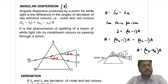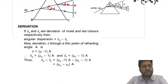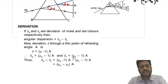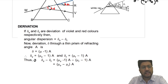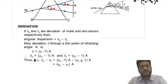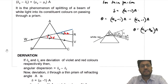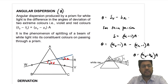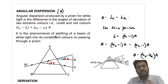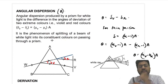The derivation: δ_v = (μ_v − 1)·A and δ_r = (μ_r − 1)·A. Thus δ_v − δ_r = θ = (μ_v − 1)·A − (μ_r − 1)·A. The A cancels and you get (μ_v − μ_r)·A. You have to remember this formula: angular dispersion θ = (μ_v − μ_r)·A for thin prism, defined as the difference of the deviation angle of violet and red rays.